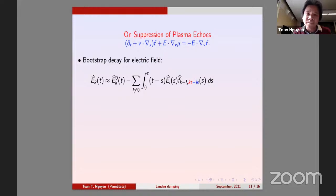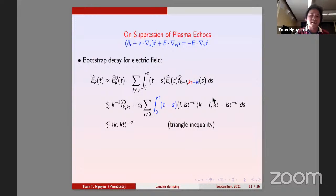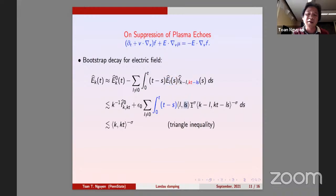The key point is: looking at the nonlinear Vlasov-Poisson equations, the Landau collision terms can be ignored via the resolvent representation. The problem reduces to the problem near vacuum, which is explicit: the electric field equals the electric field of the free transport plus a nonlinear term. Everything follows the free transport — you move to kt and come back. For Sobolev f, the electric field decays polynomially like (t minus s) to the minus sigma.